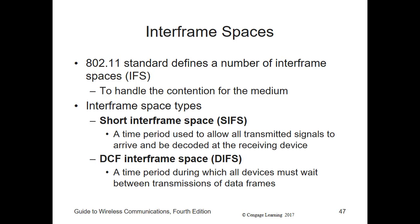In 802.11, inter-frame spaces perform critical functions. First, the Short Inter-Frame Space (SIFS) is a time period used to allow all transmitted signals to arrive and be decoded at the receiving device, including multi-path signals that take a longer trajectory and arrive later. SIFS occurs immediately after the transmission of each frame, regardless of type. No devices are allowed to transmit during the SIFS. If a frame has been transmitted to one specific device and there were no errors, the receiving device will send an acknowledgement immediately after the SIFS.